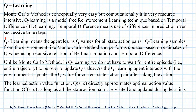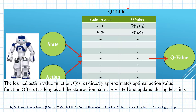We call this method Q-learning because our agent learns the Q-values for all the state-action pairs — that is, it learns a Q-table consisting of Q-values for all the state-action pairs. And using the learned Q-table, it determines the optimal policy.